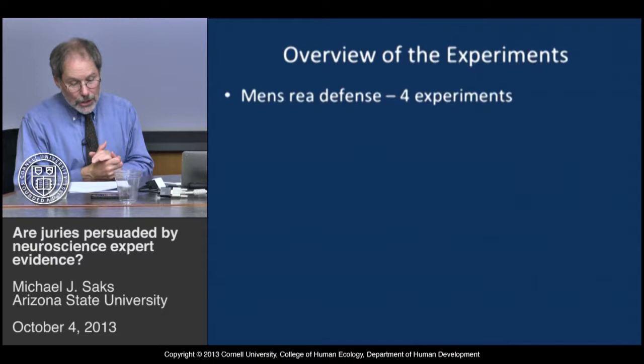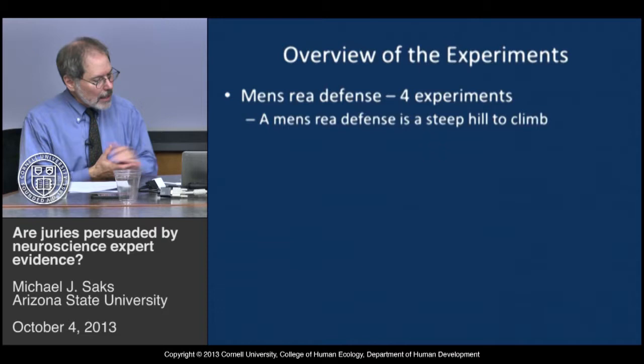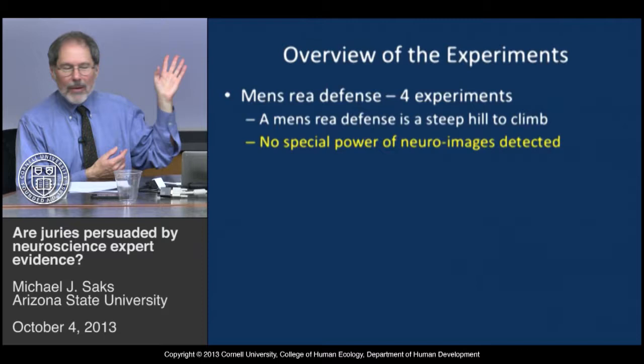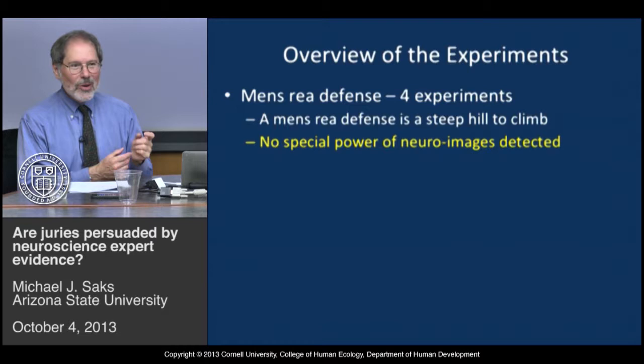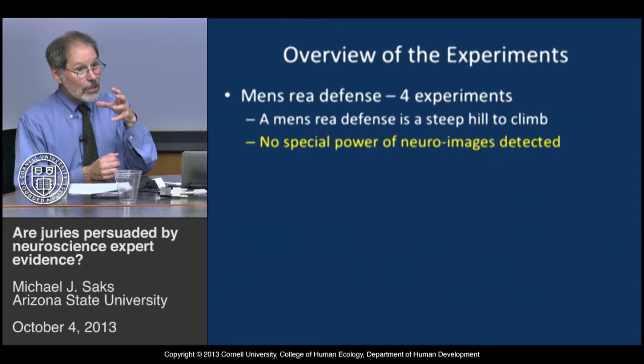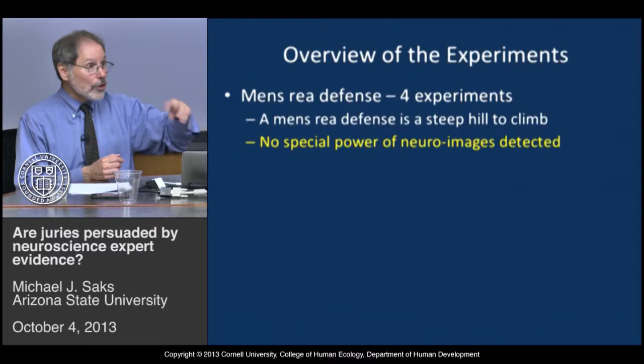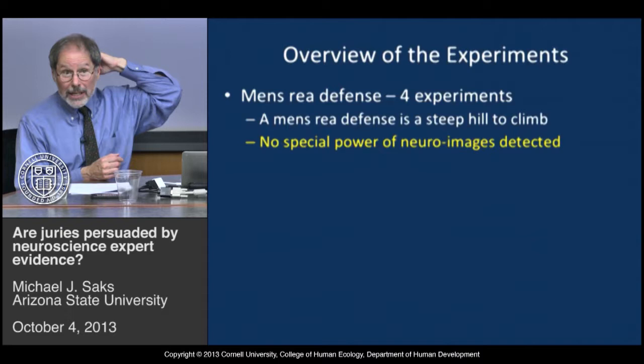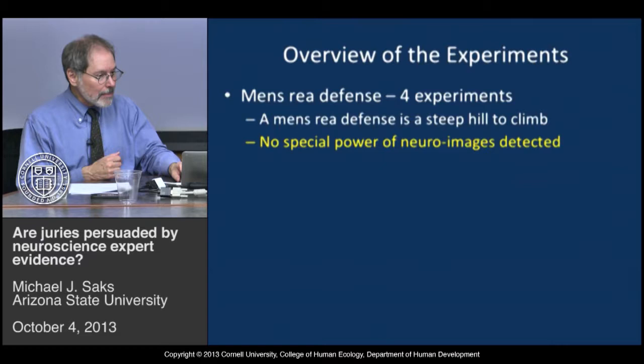The first four experiments test that. The key finding—highlighted in yellow throughout the presentation—is that we found no special power of neuroimages. Whatever impact the neuroimage testimony had, other neuroscience testimony, cognitive psych testimony, and clinical testimony had equal power to produce whatever little effect they had. This is our big null findings result.